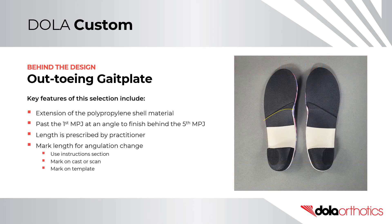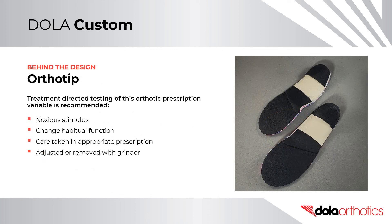Key features of this selection include an extension of the front edge of the orthotic shell past the first MPJ at an angle to finish behind the fifth MPJ. The length of the gait plate is prescribed by the practitioner based on the angulation change required. Length of gait plate can be indicated using the instructions section, marked on the cast or scan, or marked on a template. Ortho Tip: Treatment-directed testing of this orthotic prescription variable is recommended. A gait plate is a noxious stimulus that acts to change habitual pattern by making usual function or gait pattern feel uncomfortable. Care must be taken in the appropriate prescription of this orthotic shell shape.